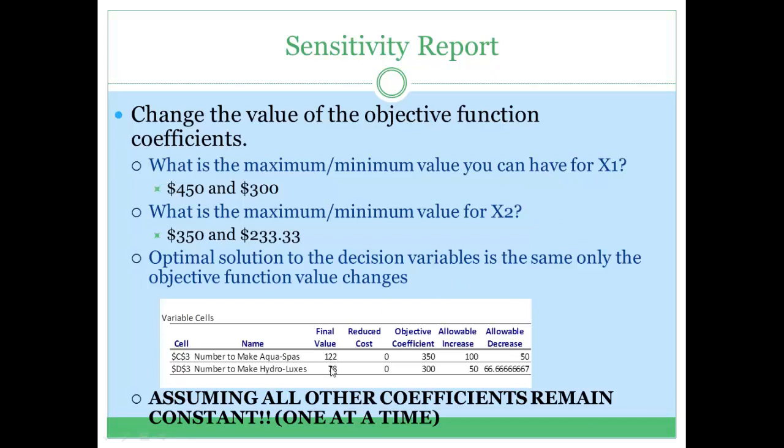This gives us the optimal solution to our problem. To maximize our profit in this case, we need to make 122 aqua spas and 178 hydroluxes.